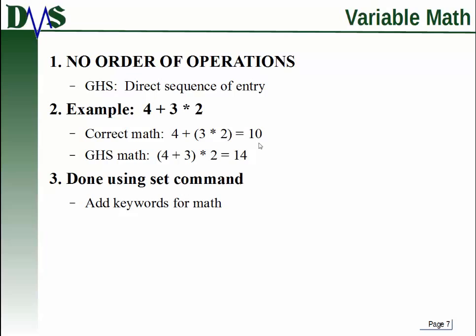GHS does not do that. GHS starts with the first two numbers it finds. So it will do 4 plus 3 is 7 times 2, that's 14. That's how GHS does that. So you have to remember with variable math that you have to work out the order of operations for yourself.